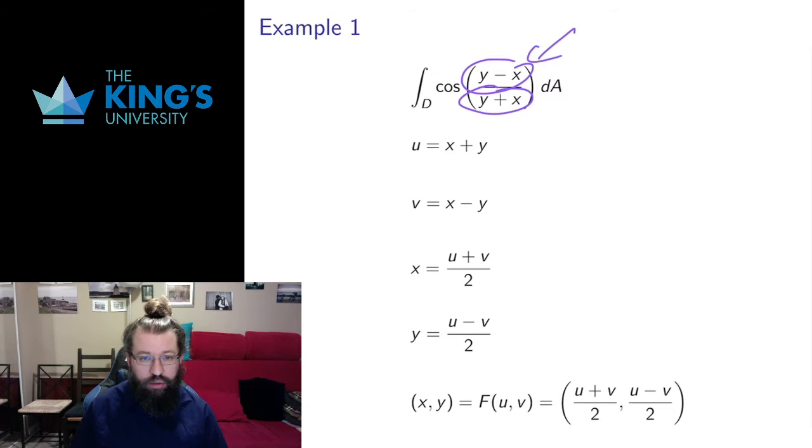So if I can simplify the integrand by choosing new variables that match those expressions, I get cos u over v instead of cos y minus x over y plus x. That's going to simplify my integrand. One of the things I can do with change of variables is simplify the integrand.